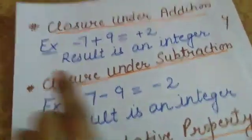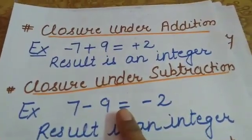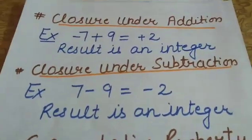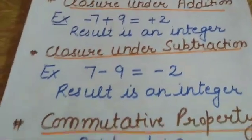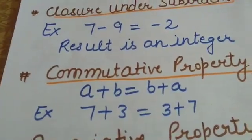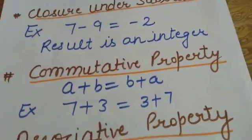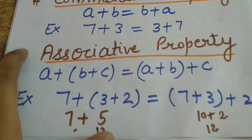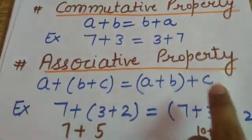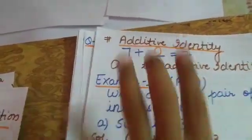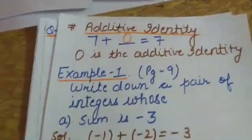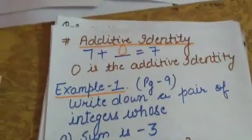Let me recall all the properties. First: closure under addition — adding two integers always gives an integer. Second: closure under subtraction — subtracting two integers always gives an integer. Third: commutative property — a + b = b + a for integers. Fourth: associative property — grouping does not affect the sum. Fifth: additive identity — zero added to any integer gives the same integer. Zero is the additive identity of every integer.